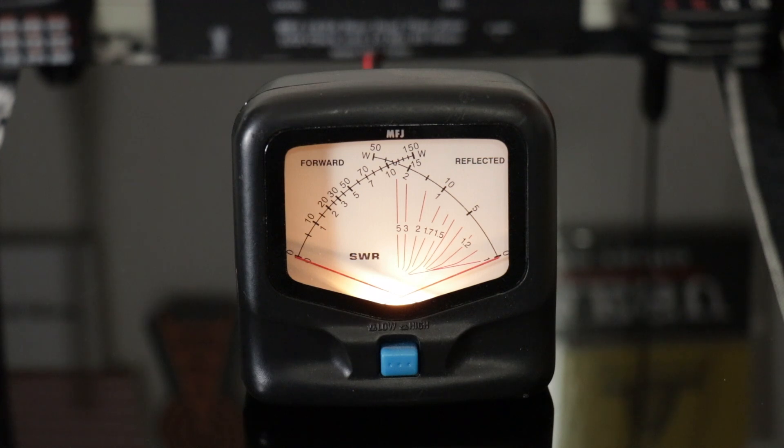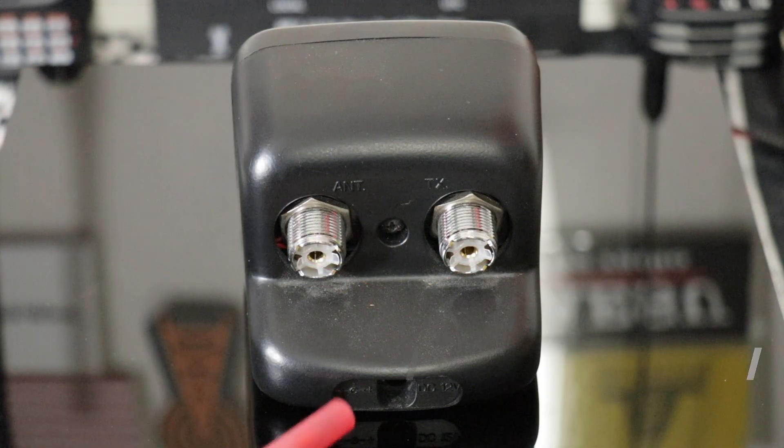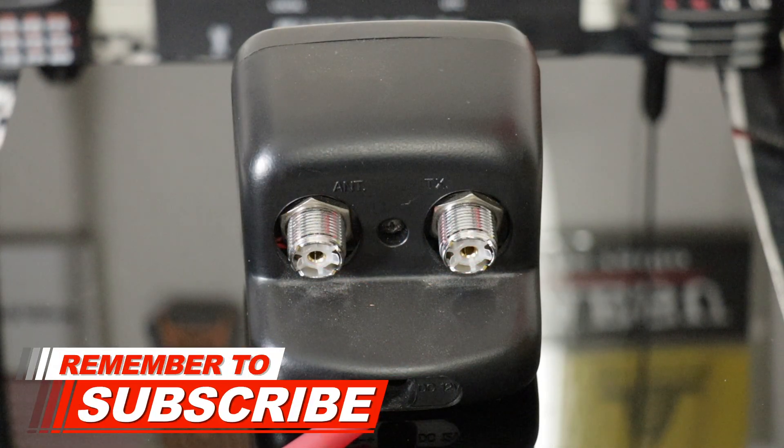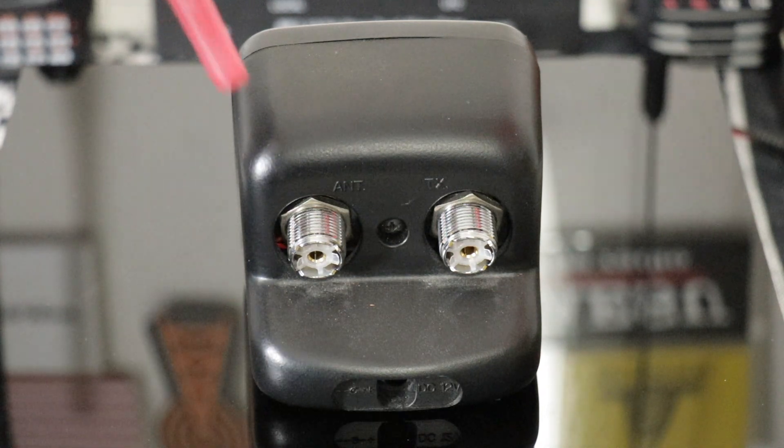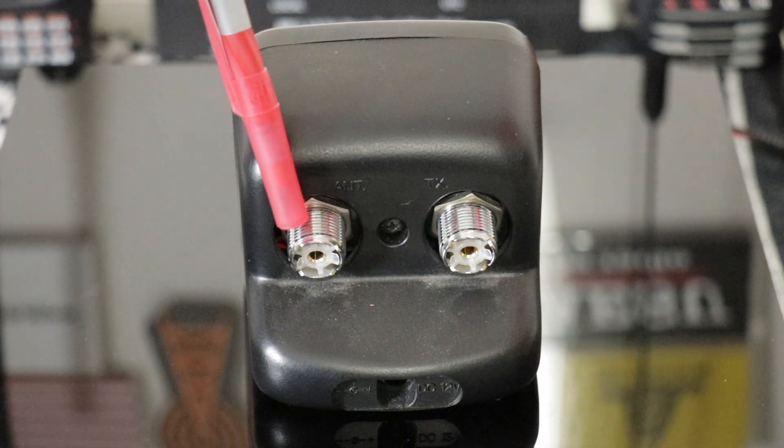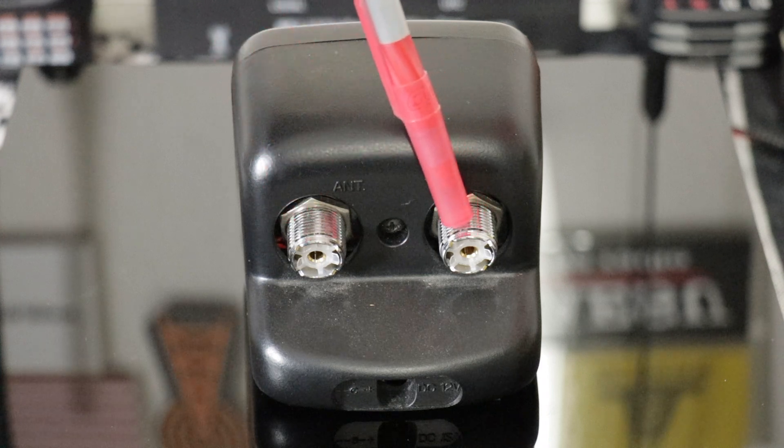It has a lamp as you can see which is 12 volt DC. This is where you connect the power cord, that's only for the lamp. It will work without the lamp connected to any kind of power. This side is for the antenna or dummy load and this side is from the transmitter.